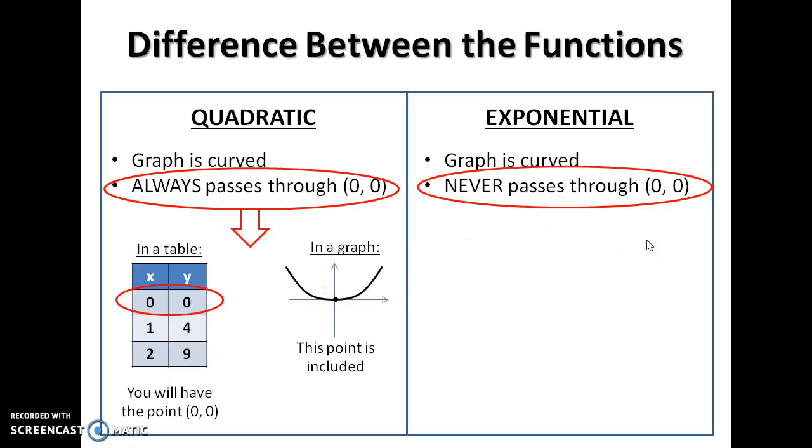Whereas in an exponential function, you will never have the point (0, 0) included. That means that in a table, you would have 0 and something else. If this here had not been included, you wouldn't necessarily know that there is no (0, 0).